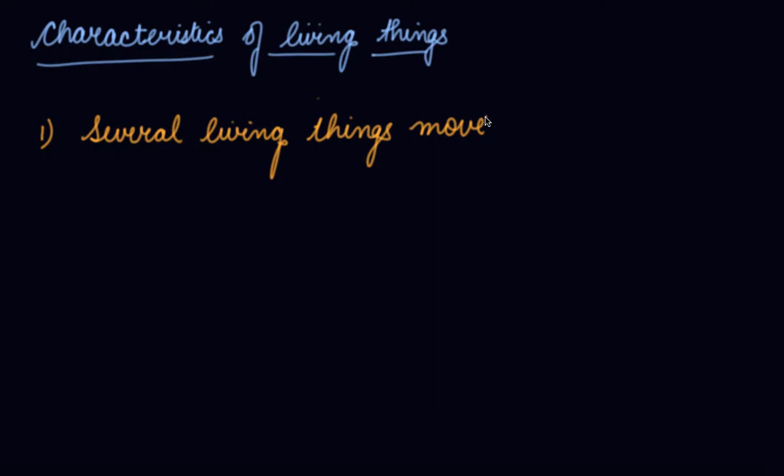Their body parts move in different ways — like your hands move in different ways, your legs move in different ways, your eyes move in different ways. Whereas plants do not move around in search of food and shelter; they prepare their own food.